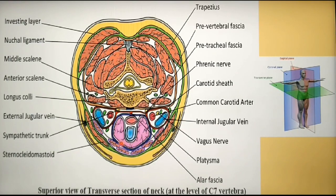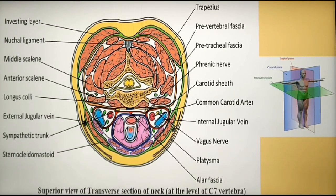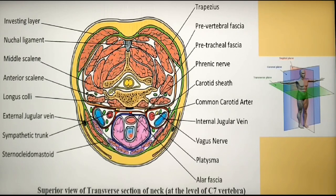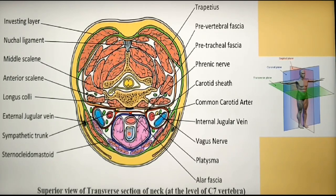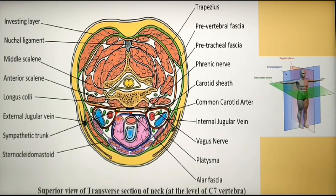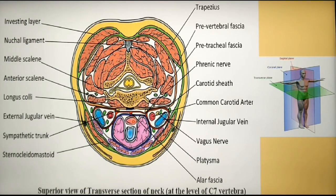Moving further deeper, the structure in pink is the thyroid. The oval structure in blue is the trachea, and the structure behind the trachea in red color is the esophagus.